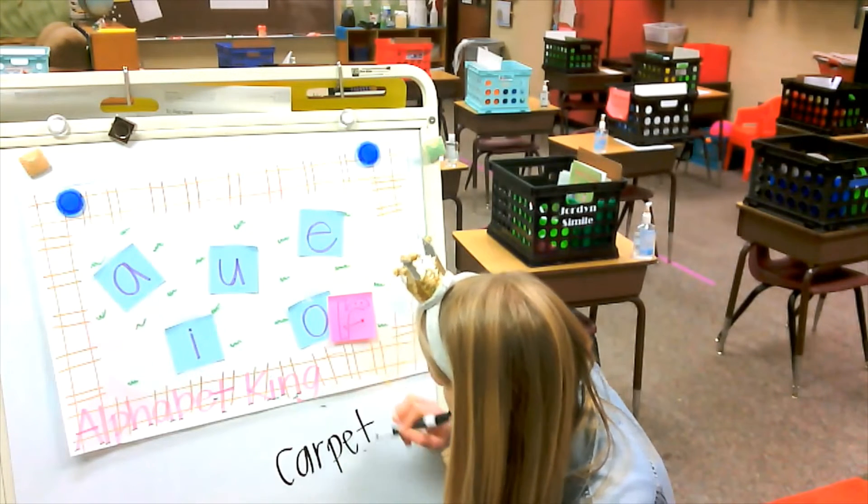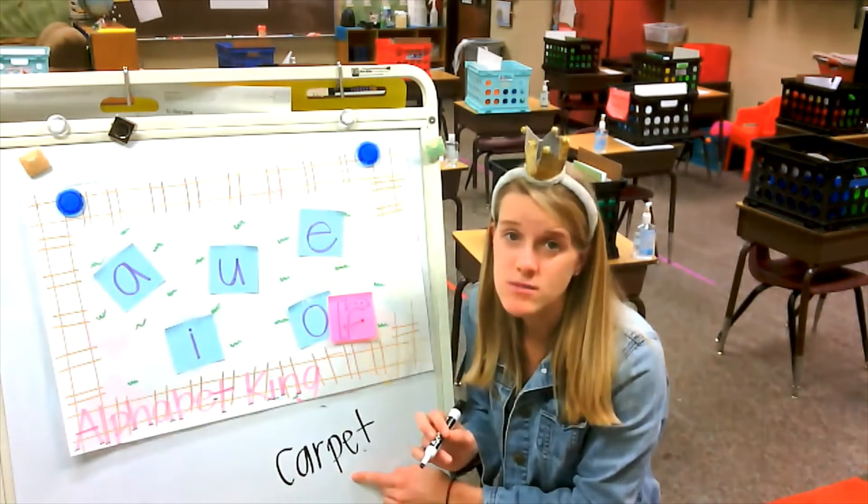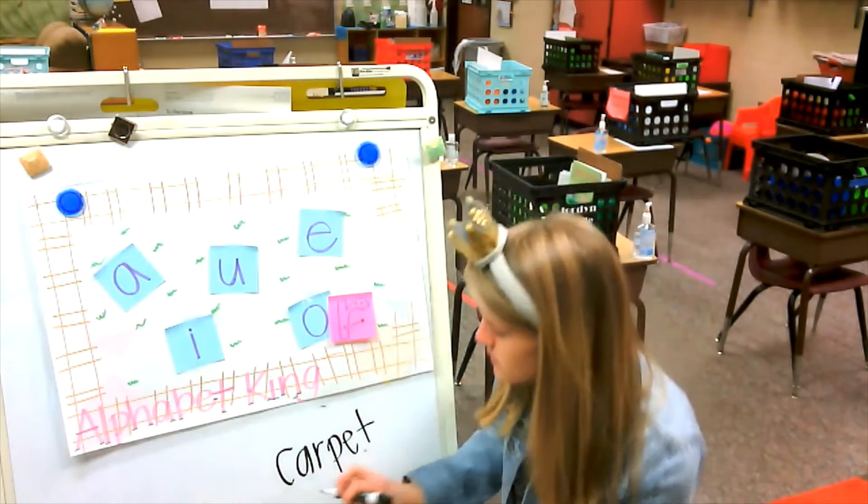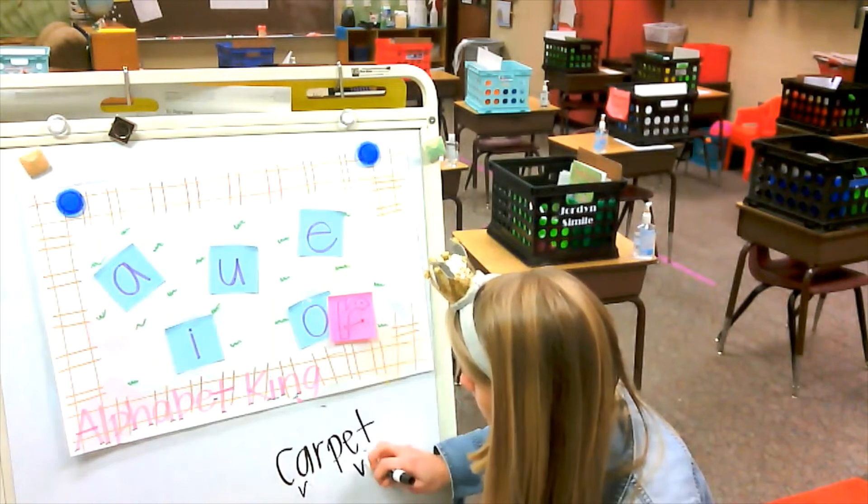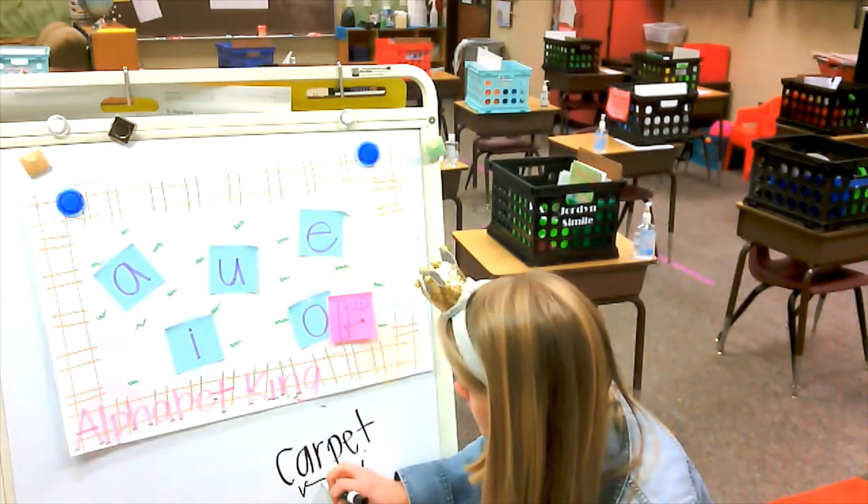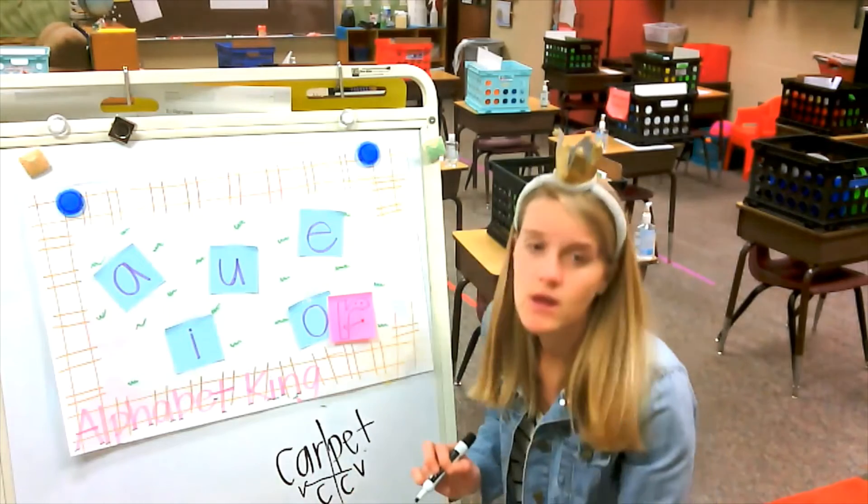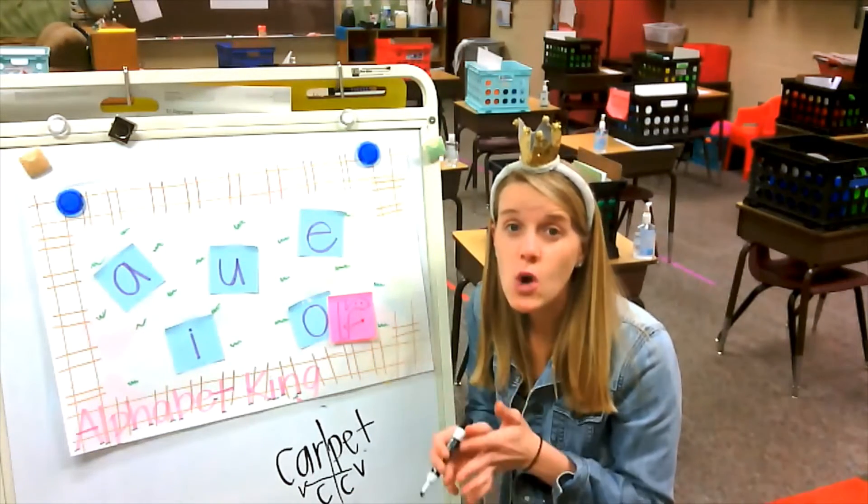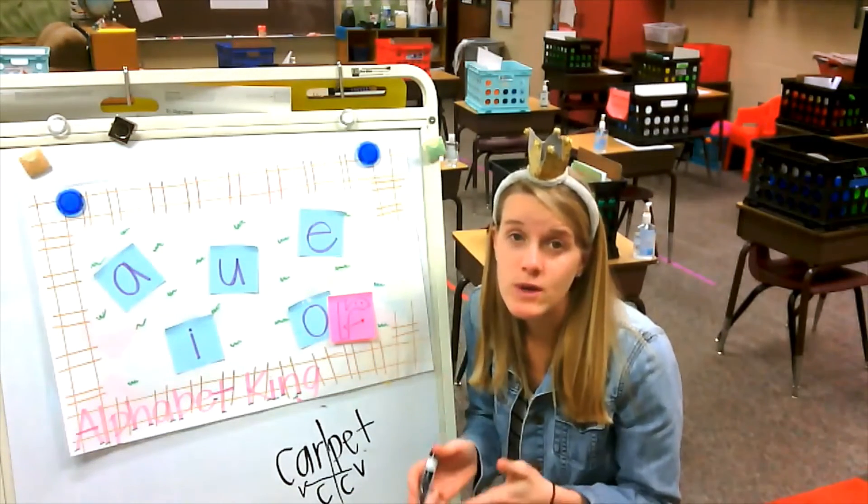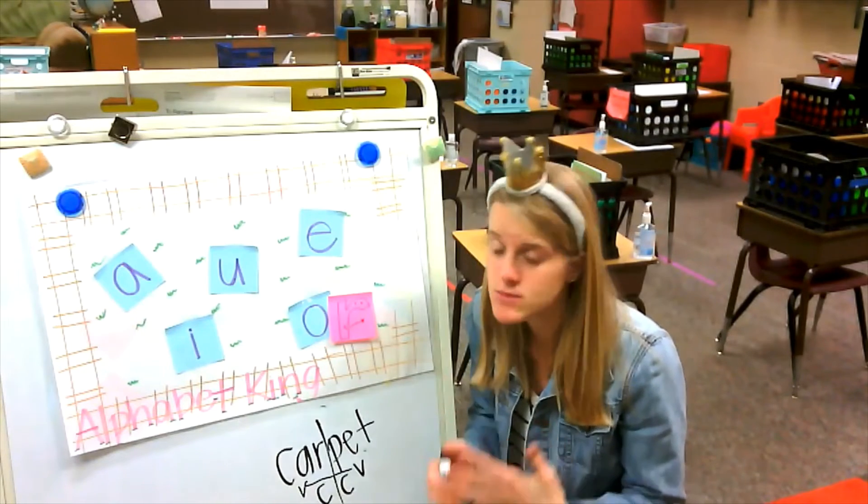Okay, so we can see this is a two-syllable word because I have two vowels. So we're going to go vowel, vowel, bridge, consonant, consonant. We can chop. So again, to know what our vowels say, we look at what's behind them so we can identify the syllable type.